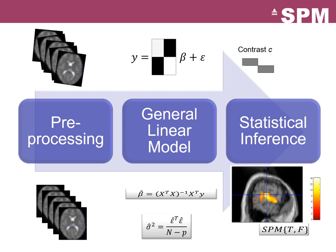SPM, or statistical parametric mapping, is the process by which we take unprocessed data, apply some preprocessing, then fit a general linear model encoding some experimental contrasts, which finally results in a statistical image that tells us whether or not a particular brain region was active. However, every time you do these analyses you will always get a result. The question is, if a given result you have is significant, was this brain region really active or could this have happened just by chance?